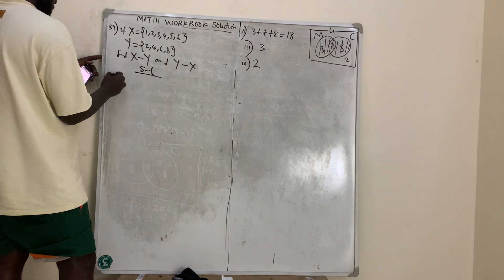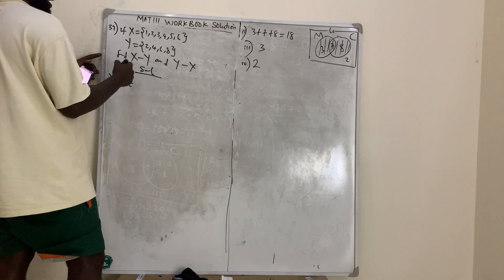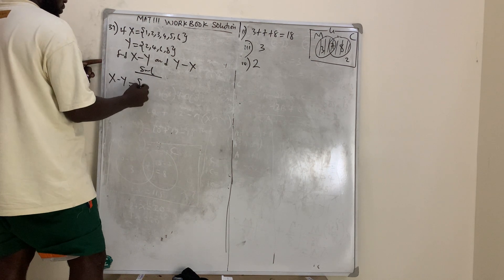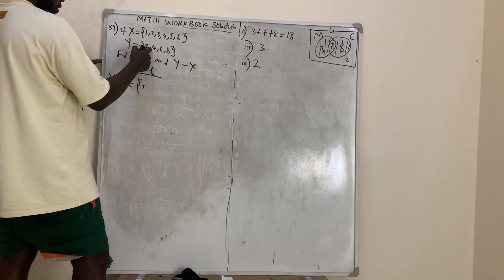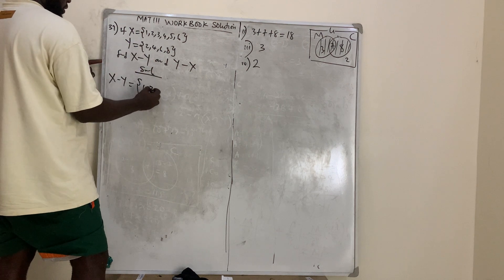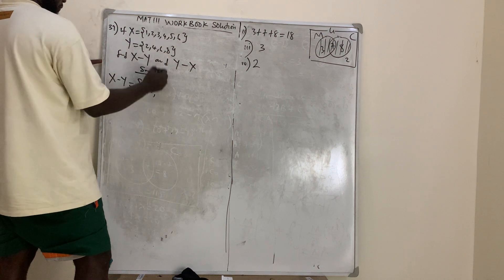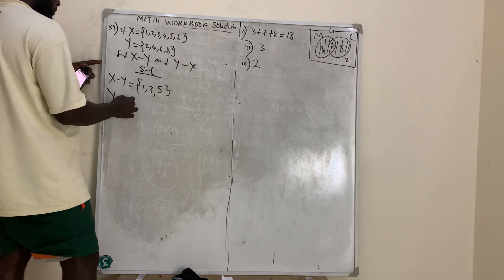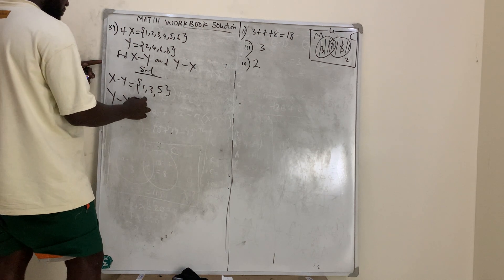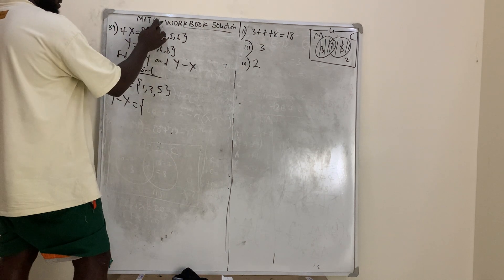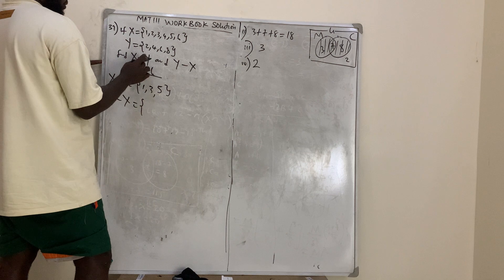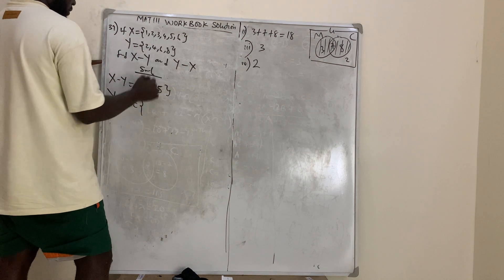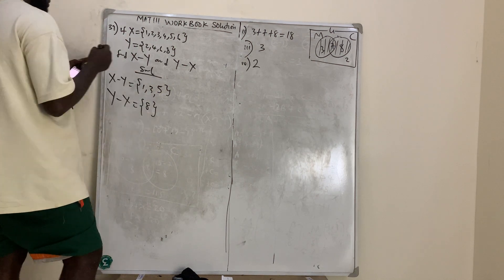X minus Y means the elements in X that you cannot find in Y, which are 1, 3, and 5 — they are not in Y. Y minus X means the elements in Y that you cannot find in X, which is only 8.